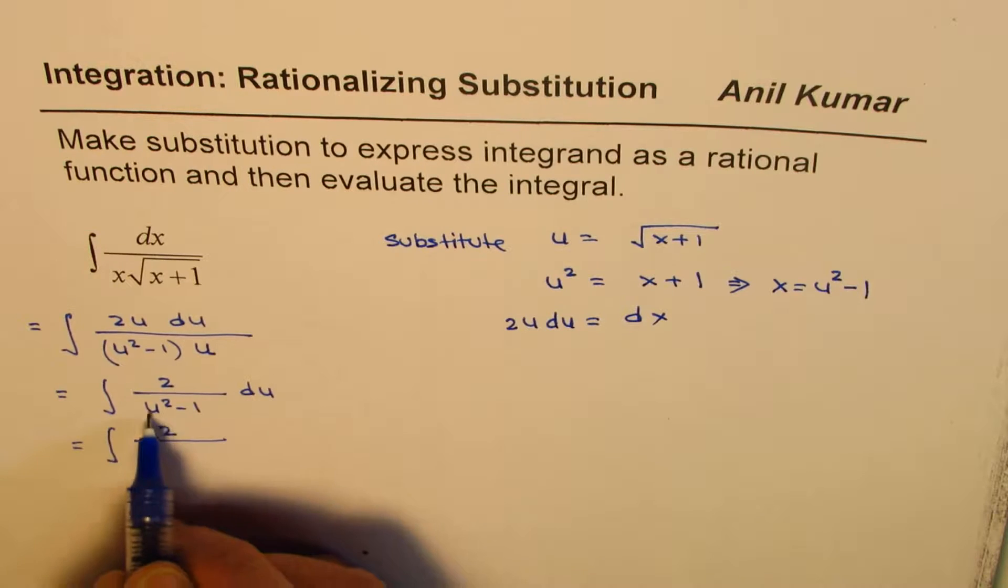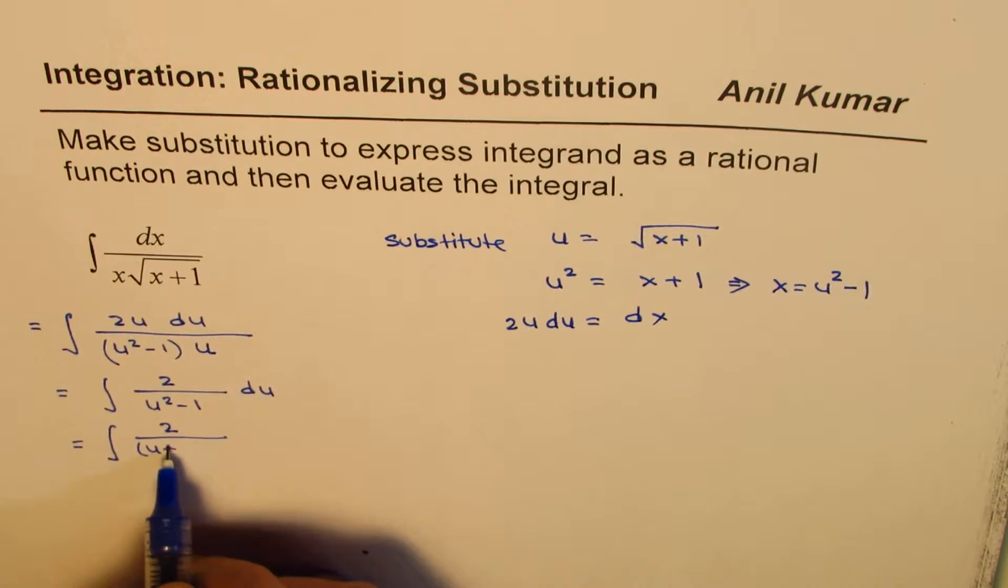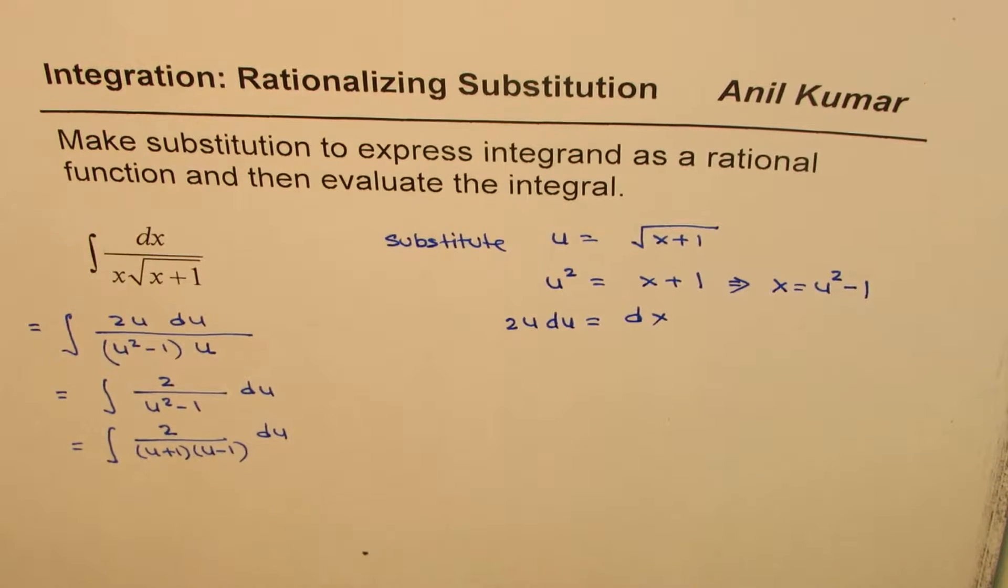Let me rewrite this as factors of u square minus 1 which is u plus 1 times u minus 1 du. So we come to this stage.